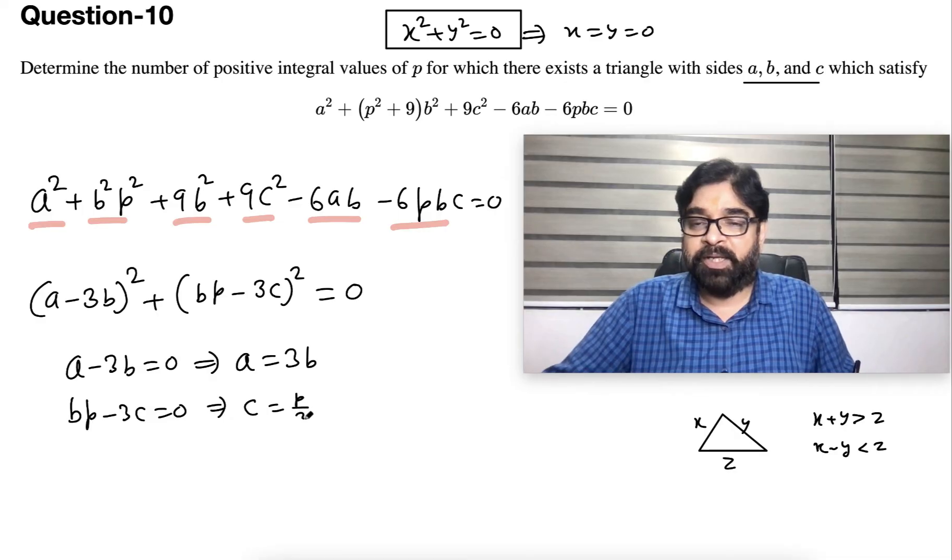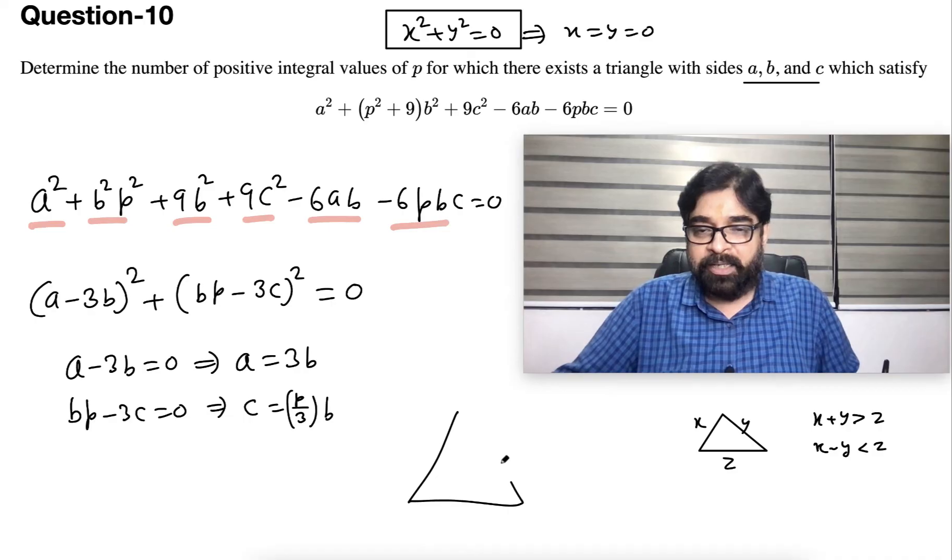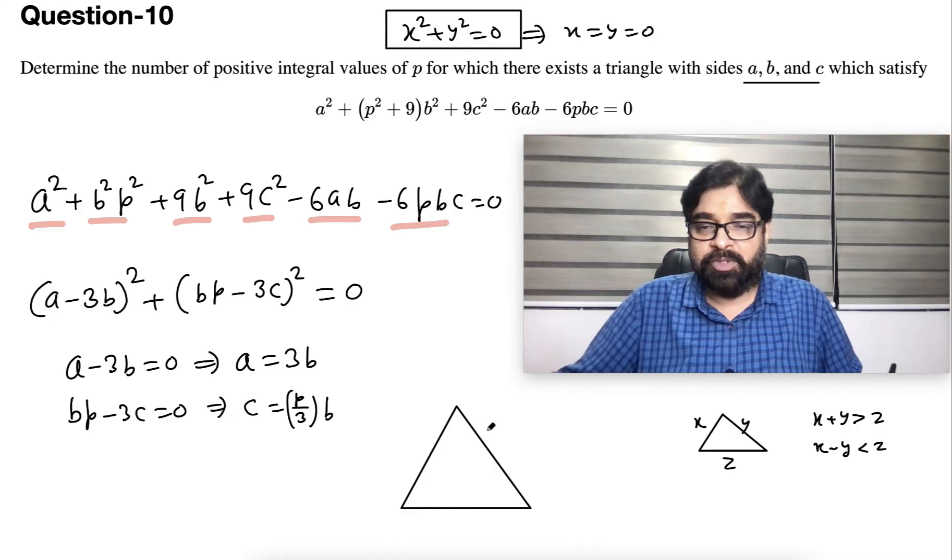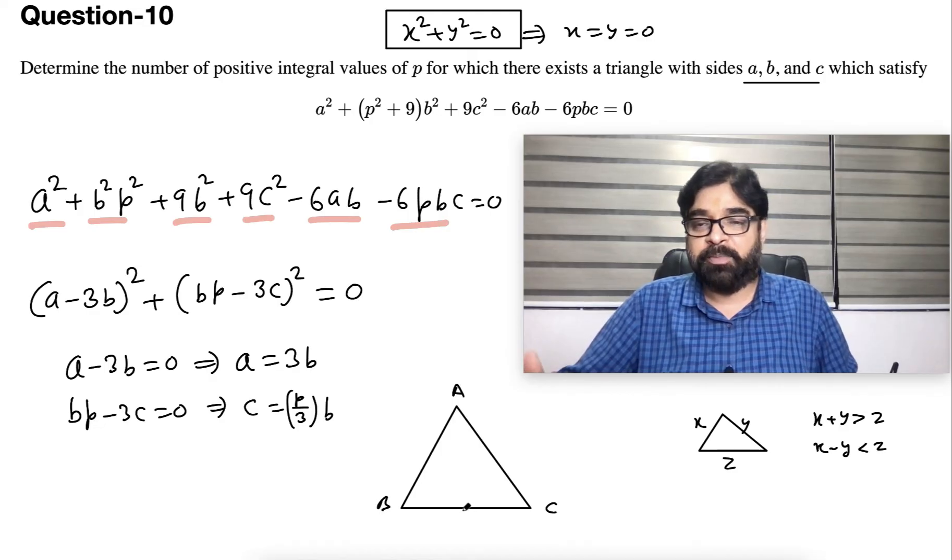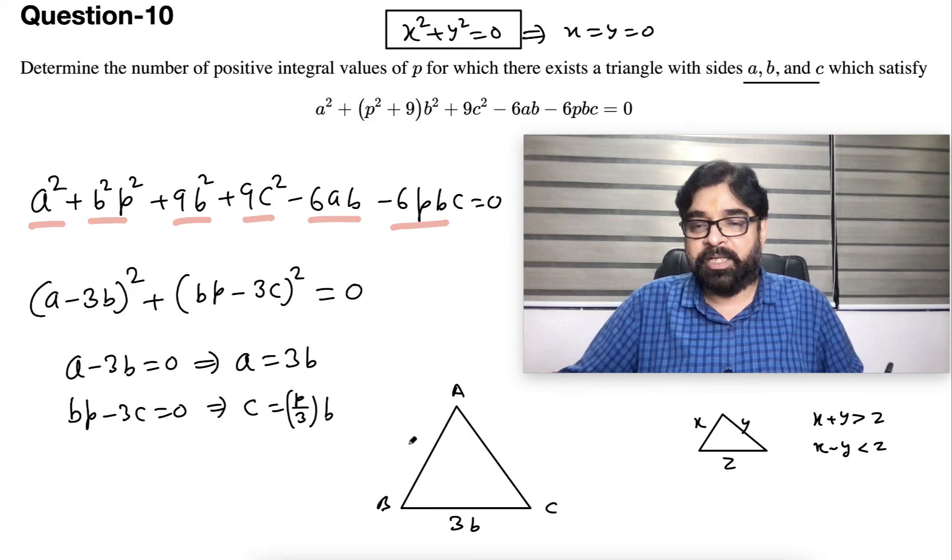So now I can write, we can make a triangle like this. Suppose this is capital A, this is capital B, capital C. Opposite to capital A, small a is 3b, and opposite to capital C is the small side, that is (p/3)b. And opposite to B is b.